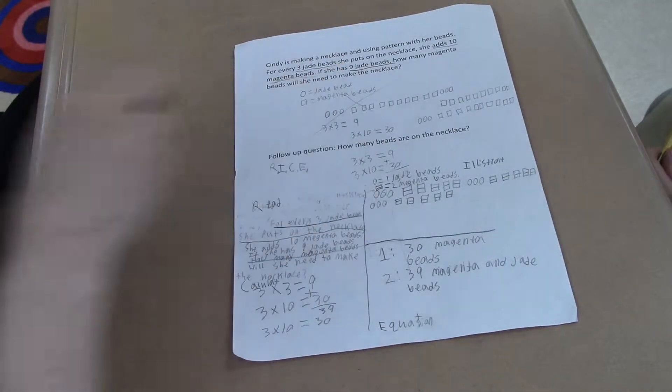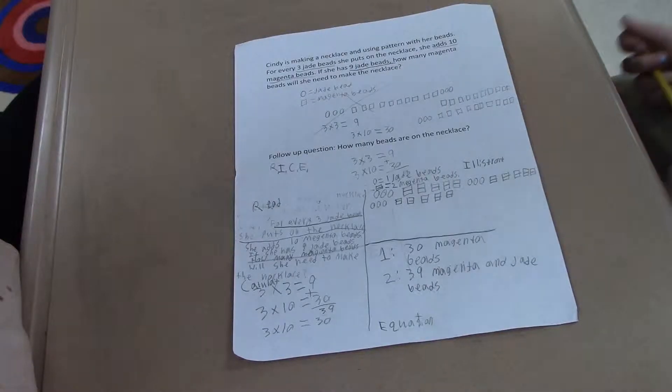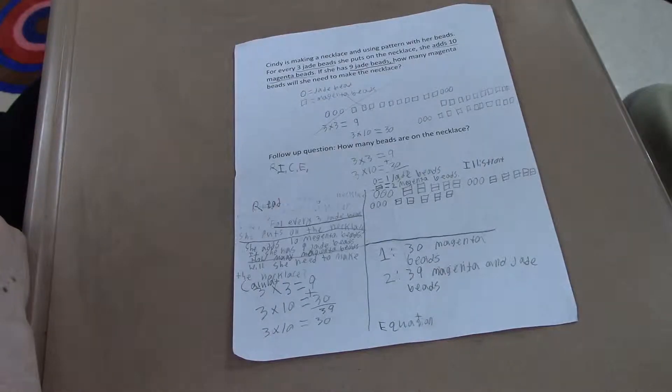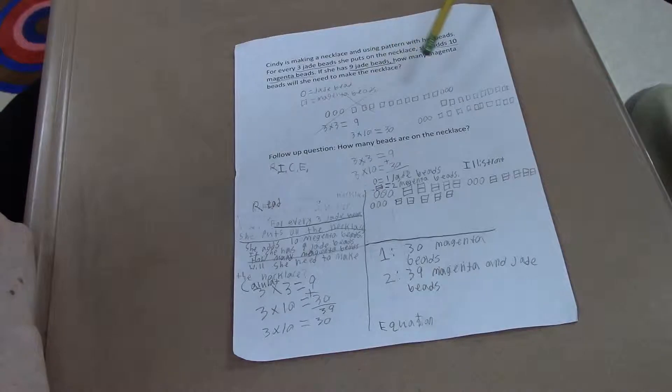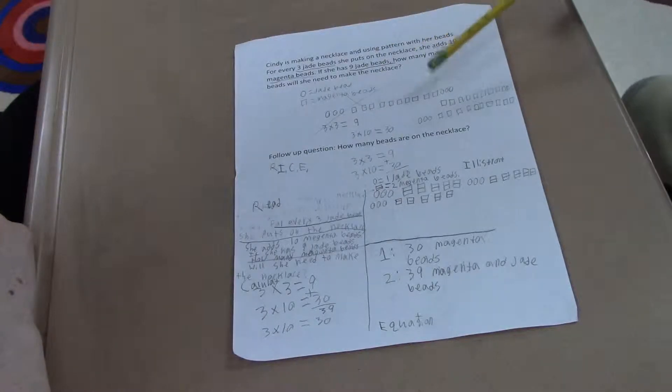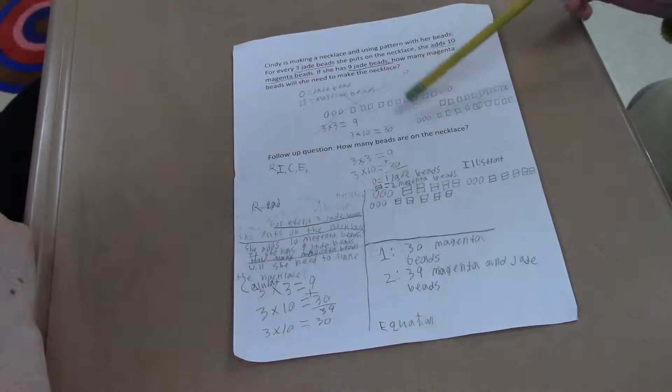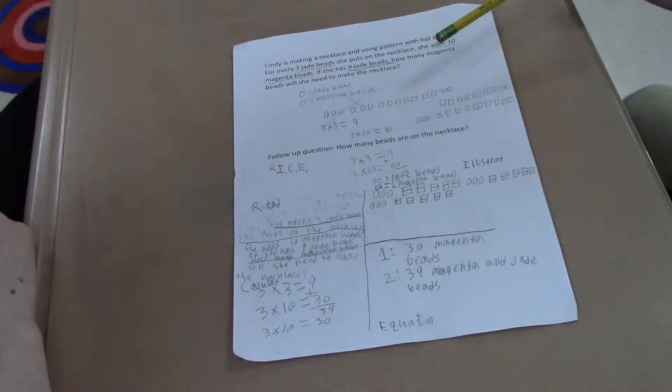Can you explain some of your thinking here and how you went through this problem? I started off with making the pattern so I could visually see it. And I did some multiplication to find the numbers, but then I realized there was a better way in doing it.